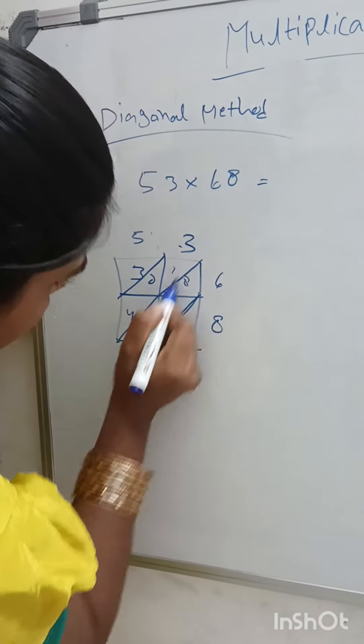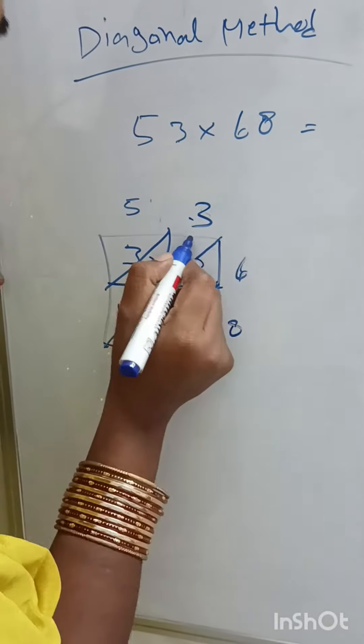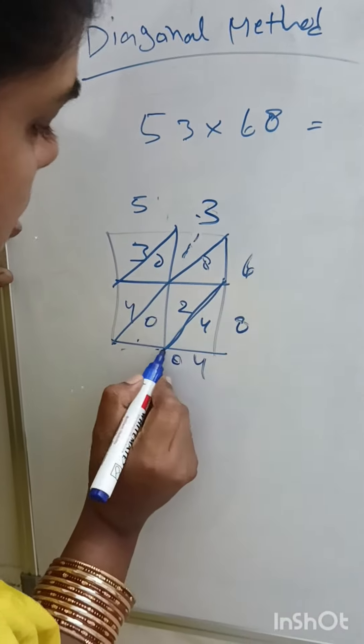This is the diagonal method. This is 4. 8 plus 2 is 10. 1 carry out only. 4 plus 2 is 6.